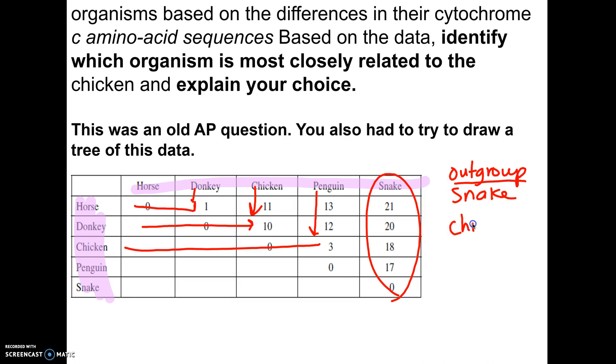Another question that was asked about this picture was who's the most closest relative to the chicken? Well, if I look at the chicken, I can compare them to the horse and the donkey here. And then I can also compare the chicken to the snake and the penguin here. And the least amino acid differences would be between the chicken and the penguin. So the answer would be that the closest relative to the chicken would be the penguin.